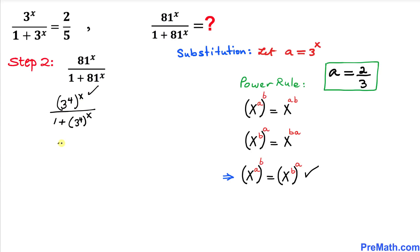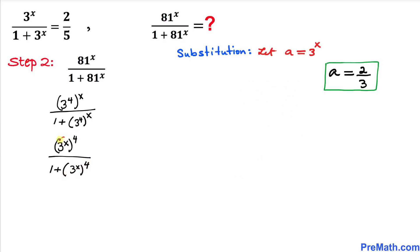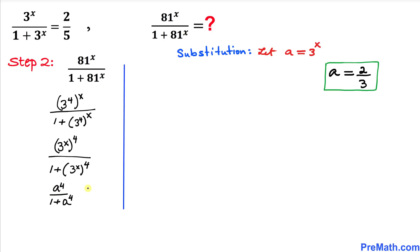Applying the rule, this becomes (3^x)^4 divided by (1 + (3^x)^4). Since 3^x equals a from our substitution, this can be written as a^4 divided by (1 + a^4). Since a equals 2/3, we substitute to get (2/3)^4 divided by (1 + (2/3)^4).